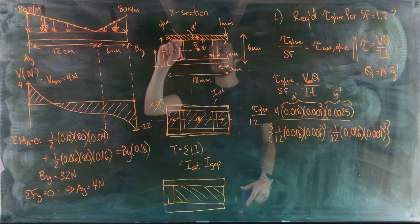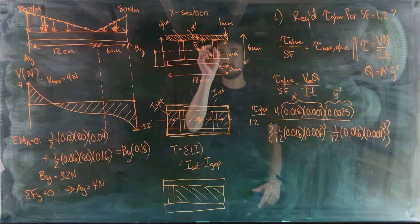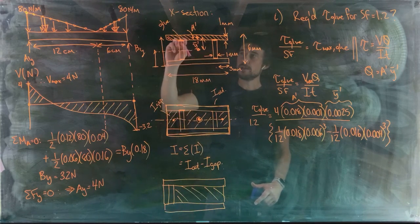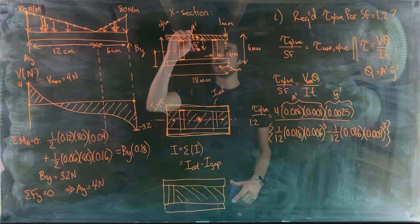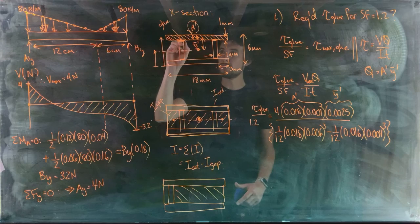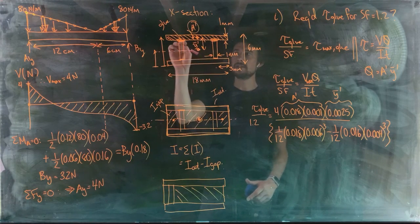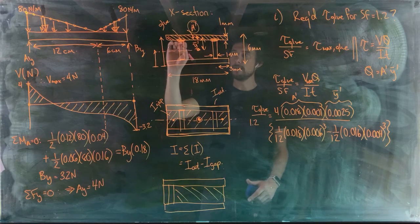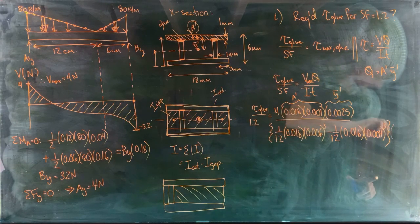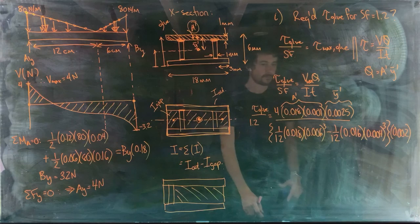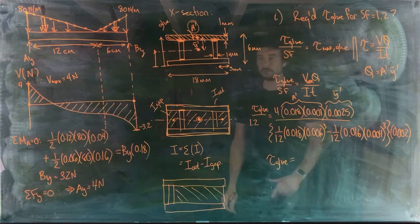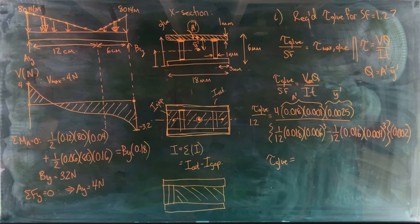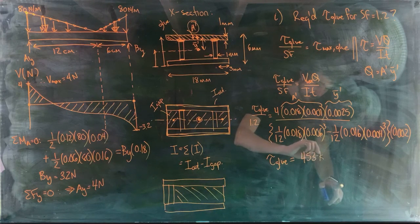Variable t is the combined length of the two glue lines — 1 mm on each side — so t = 2 mm = 0.002 m. Solving the full equation gives the required shear strength of the glue: 453 kilopascals.